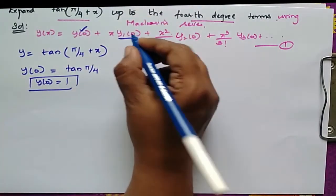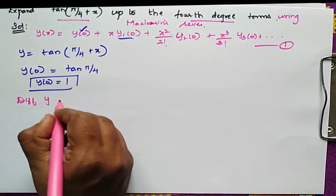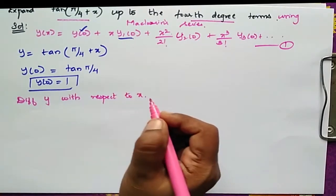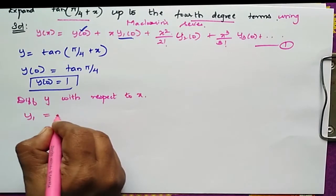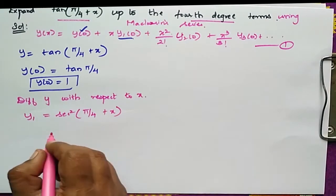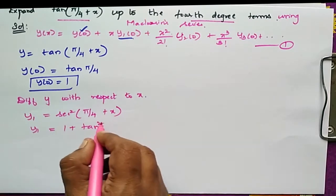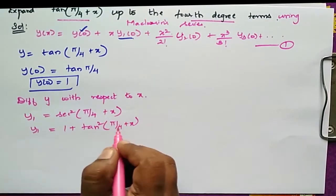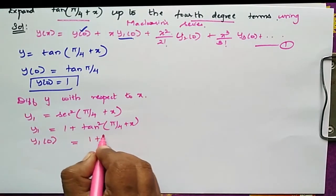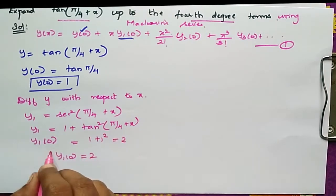Now find y1(0). Differentiate y with respect to x: y1 = sec²(π/4 + x) = 1 + tan²(π/4 + x). Substituting x = 0: y1(0) = 1 + tan²(π/4) = 1 + 1 = 2.